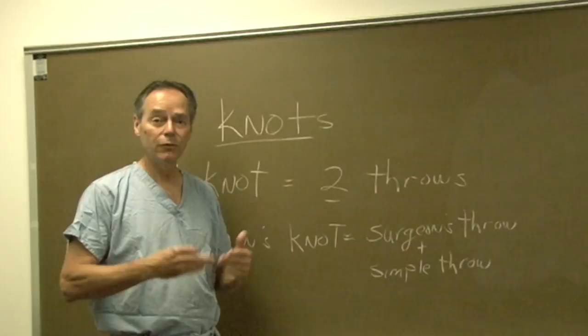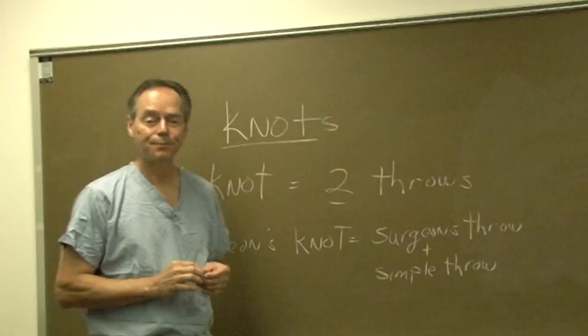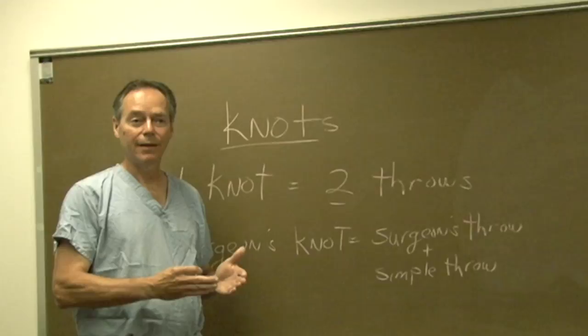Now you may use additional throws. For instance, if I said create a surgeon's knot followed by two additional throws, it's basically a surgeon's knot and then on top of that is a square knot comprised of two additional throws.